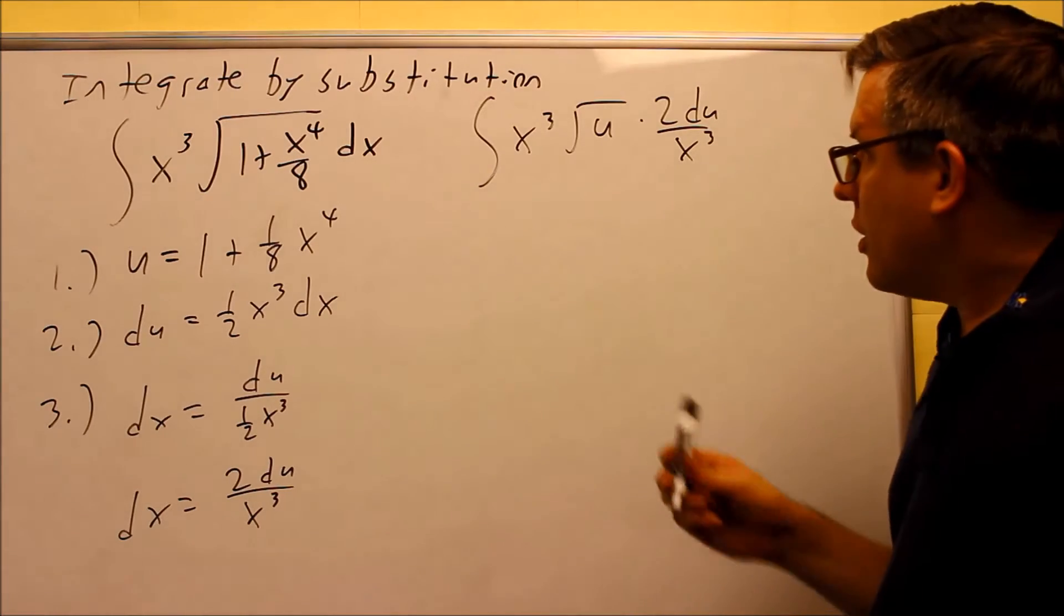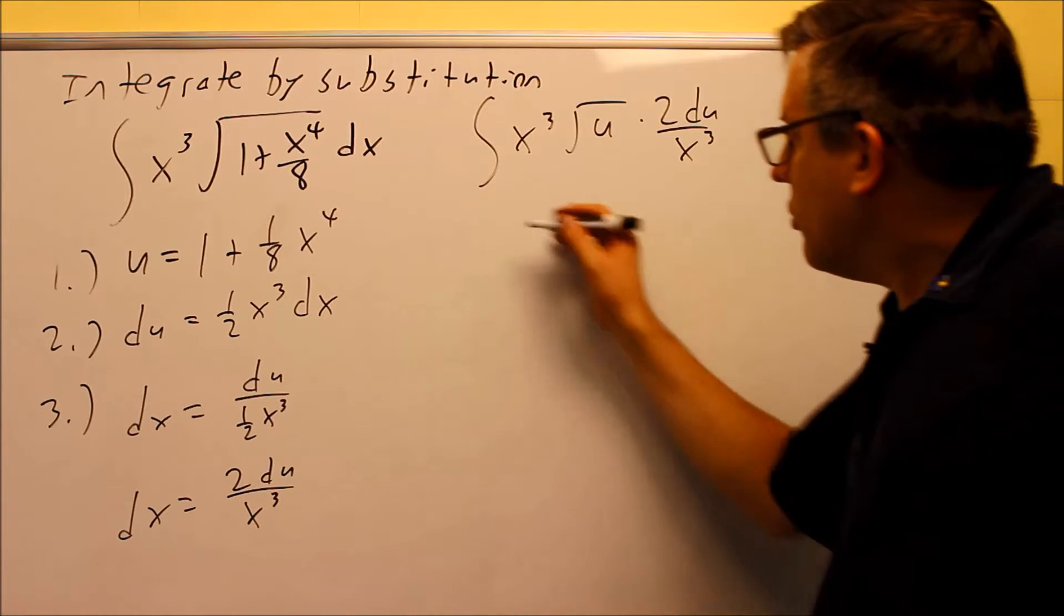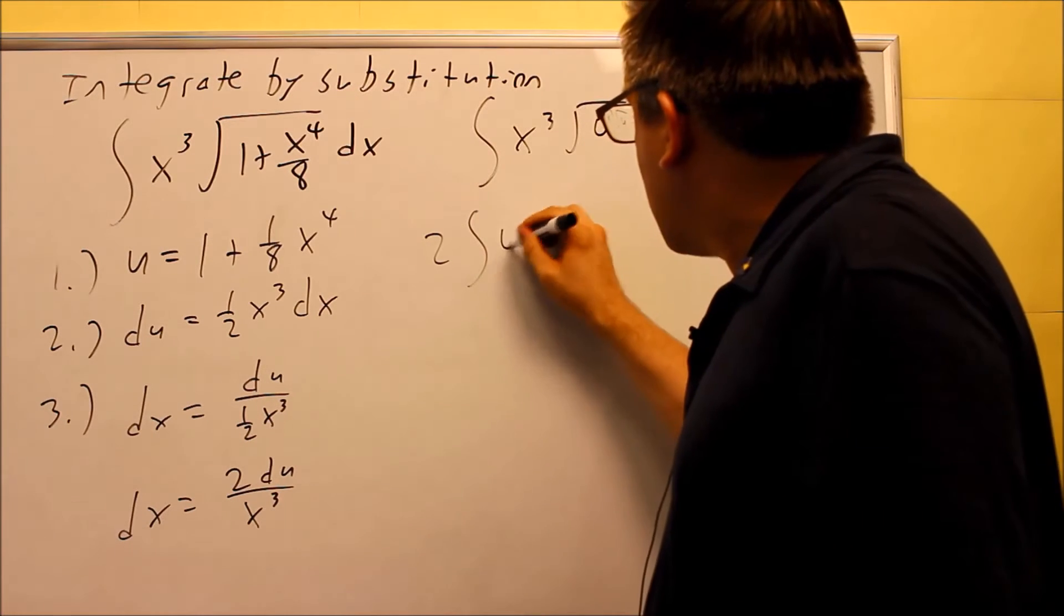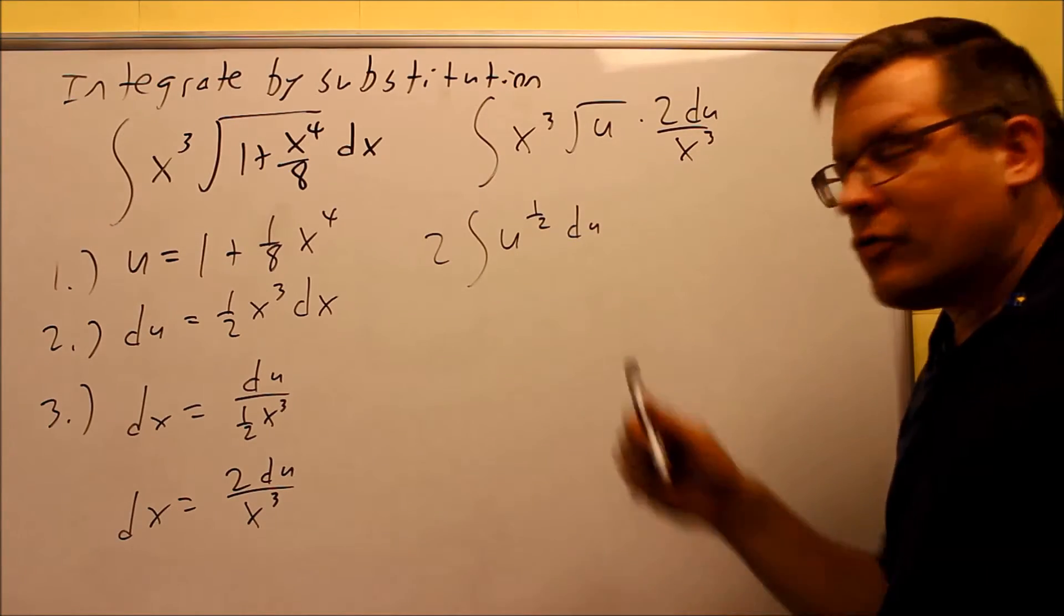And what will happen there is the x cubes, those can cancel, and then the 2, we're going to move that on the outside, and then I just end up with this here. So 2 is on the outside, I have u to the one half du.